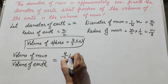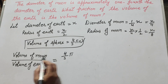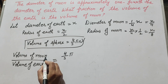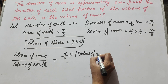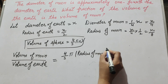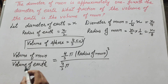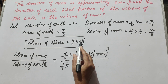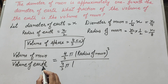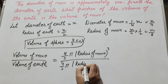Volume of moon — since moon is a sphere, we use the formula 4 over 3 times pi times r cubed, where r is the radius of moon. This is placed in the numerator. In the denominator, for the volume of earth, we use 4 over 3 times pi times the radius of earth cubed.